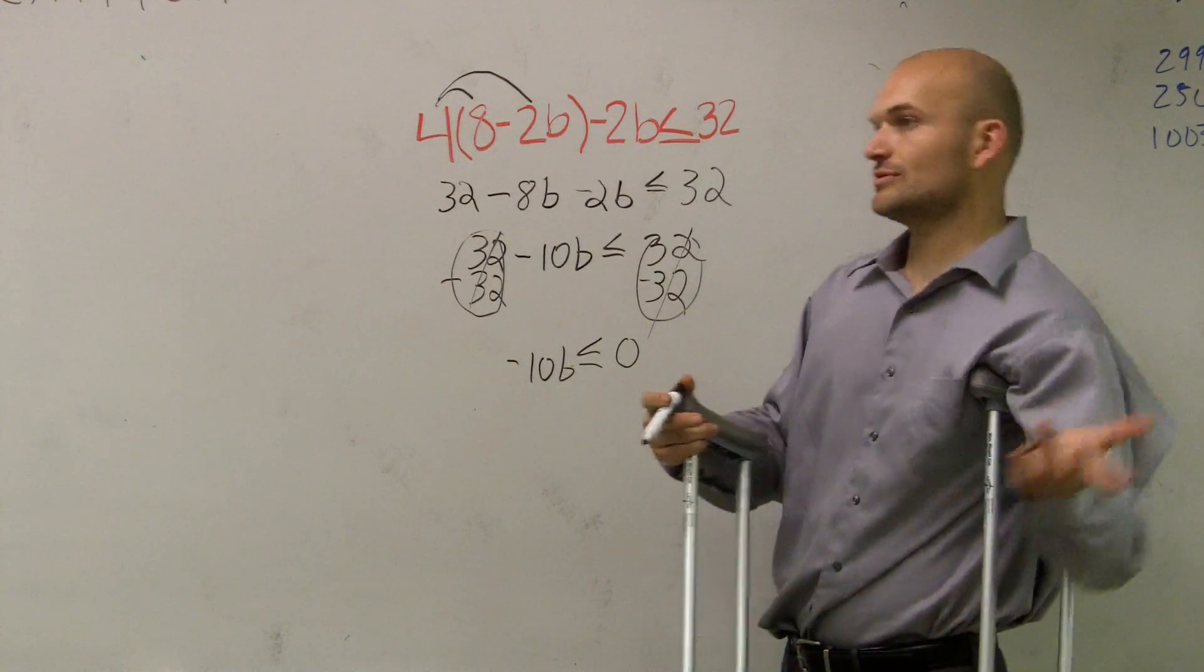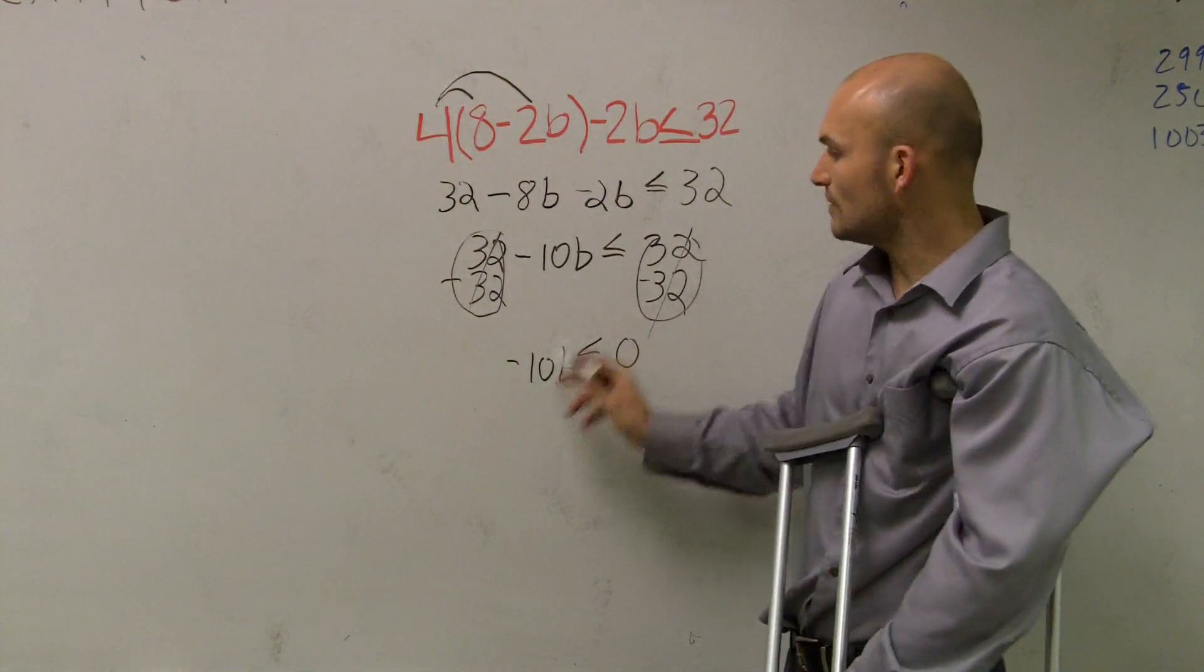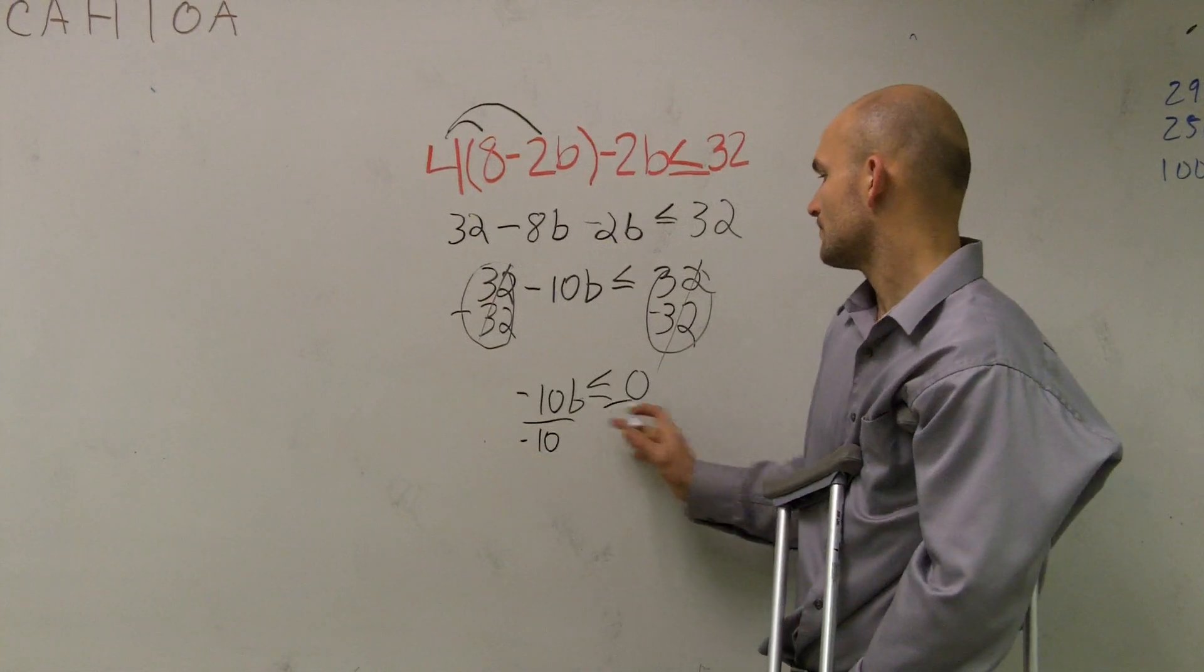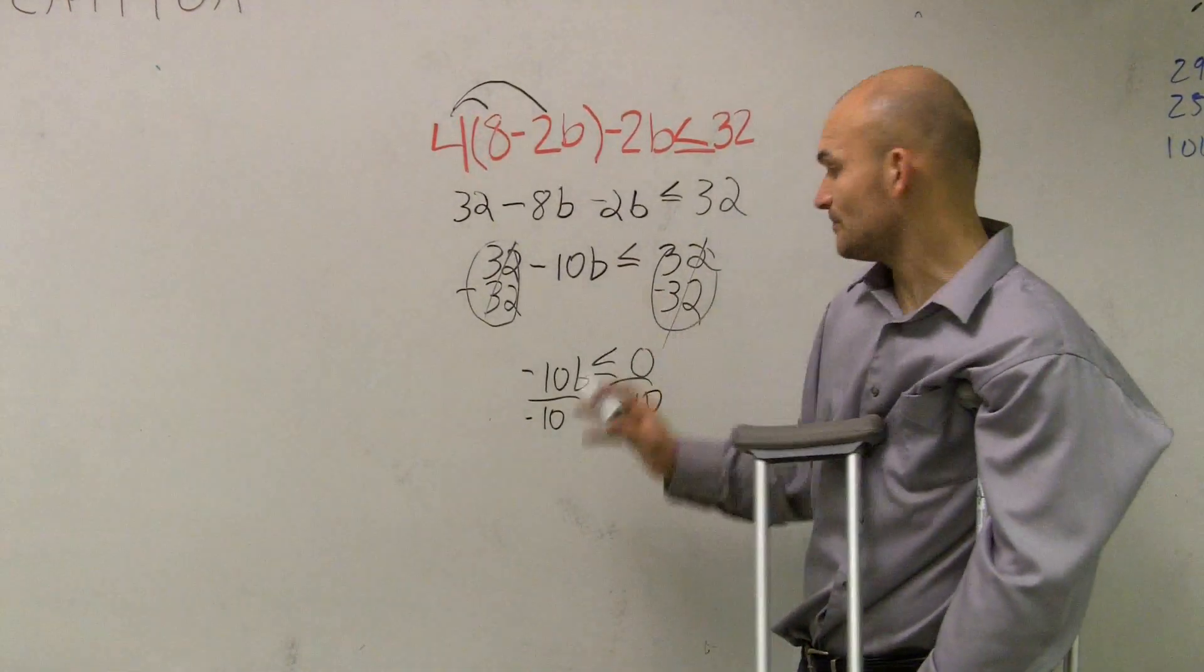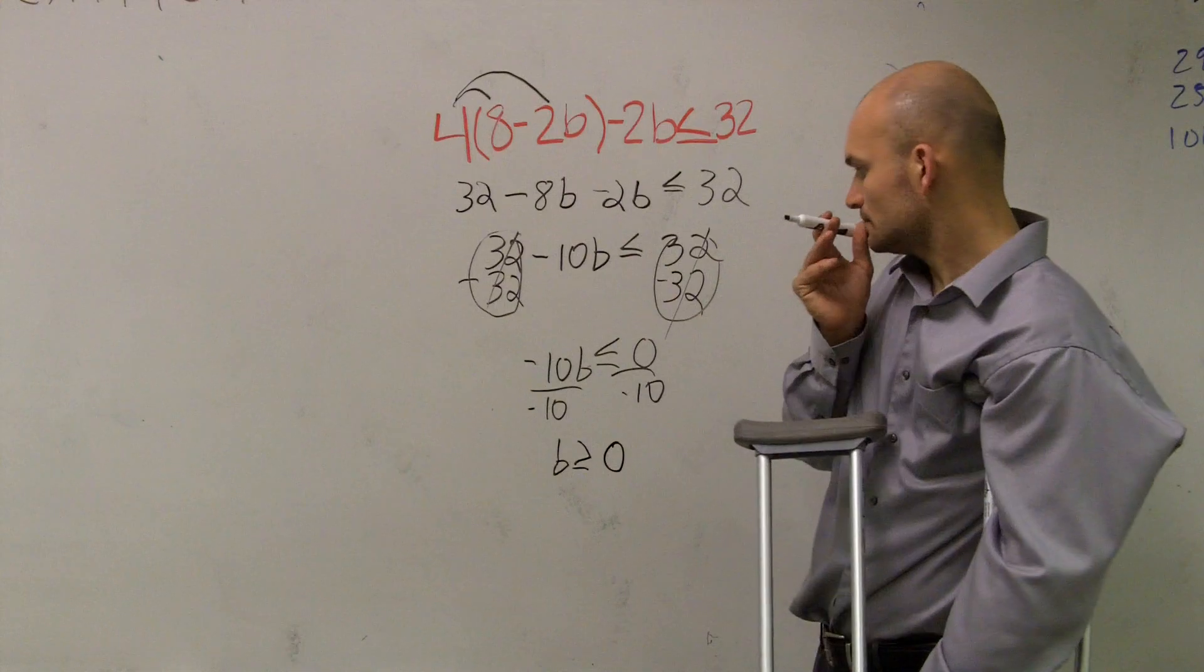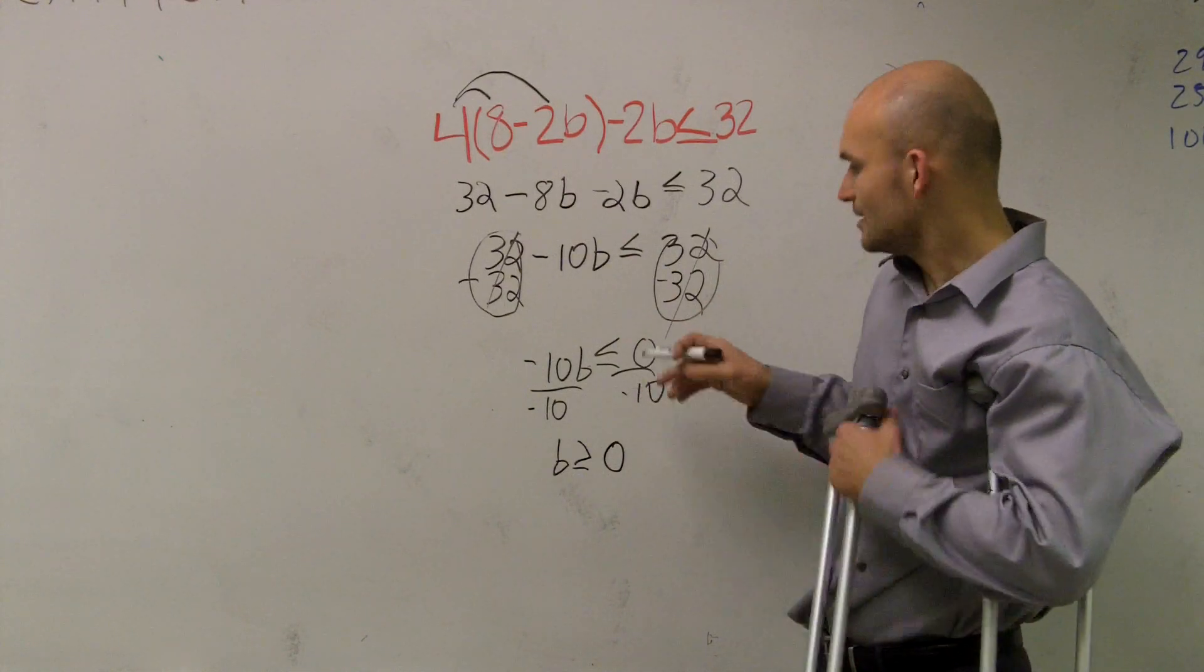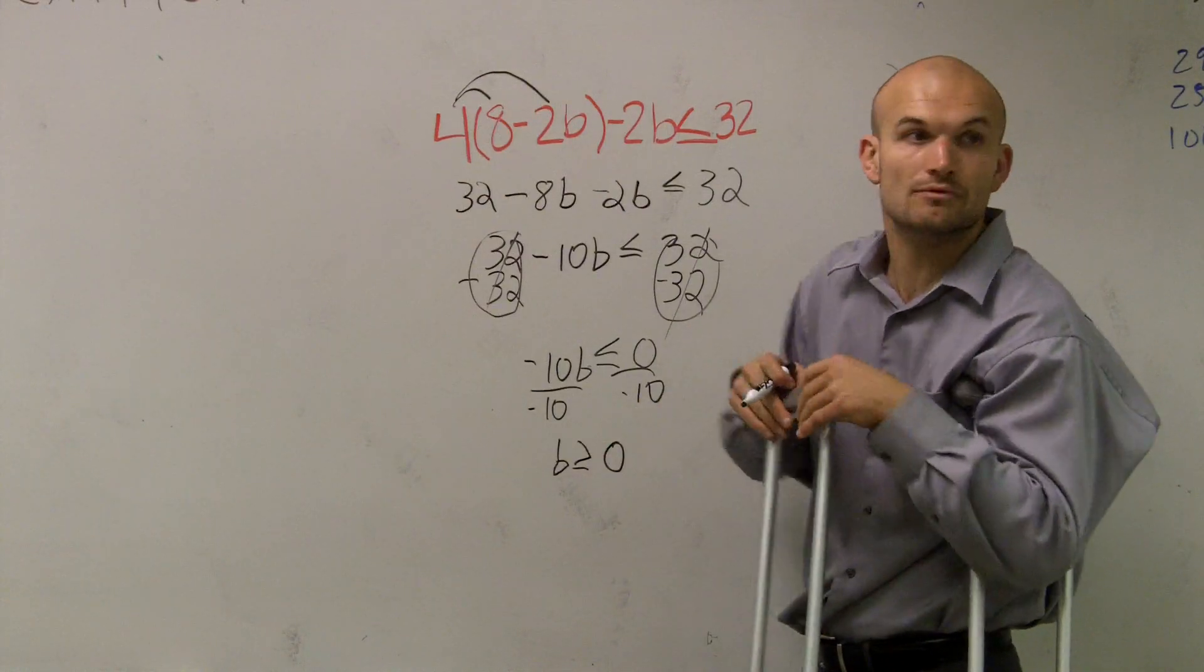So now a lot of us are like, oh, well, it's equal to 0. Something's wrong. Check it, it works. Oh, okay, it still works. Well, now, to get it to solve for b, we need to divide by negative 10. And remember, since we're dividing by a negative number, we flip the sign. Zero divided by any number is going to equal 0. So b is greater than or equal to 0.